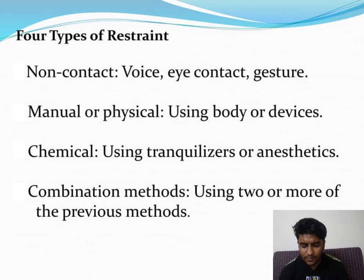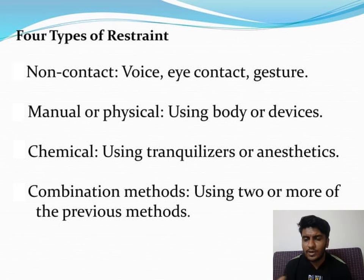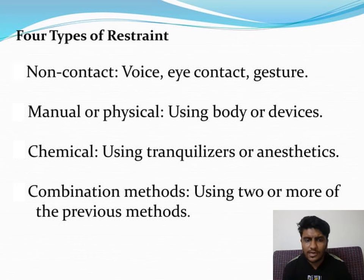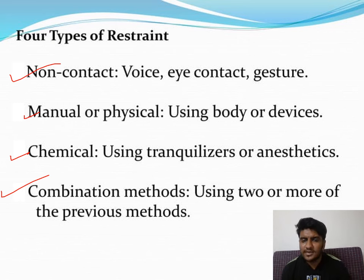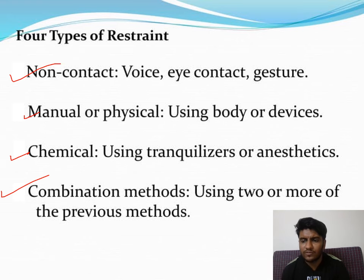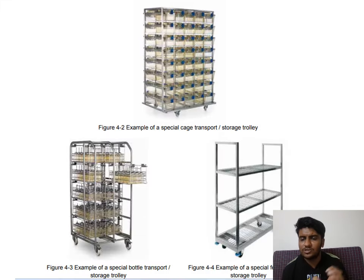There are four types of animal restraints: manual, chemical, combination method, and non-contact method. In the manual method, devices like restrainers are used. In the chemical method, minor tranquilizers are used. In the combination method, a mixture of both is used when the surgery or experiment is prolonged.